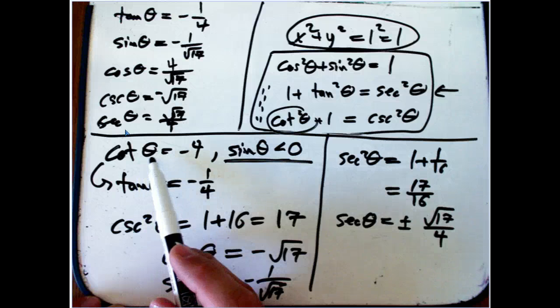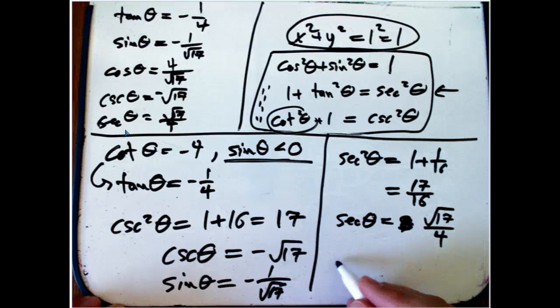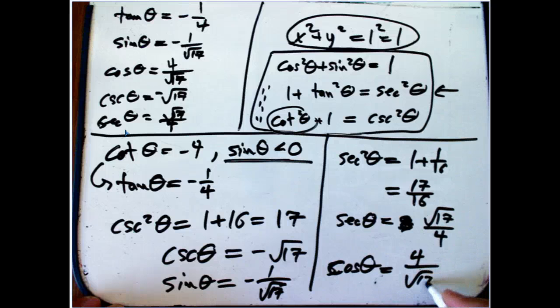We know that sine is negative. If cotangent, which is a ratio of those two is going to be negative, this had better not be negative. Okay? So that's just going to be plus. And then secant... And then cosine, rather, is going to be 4 over root 17. If you want to rationalize it, 4 root 17 over 17.